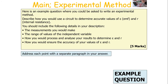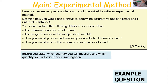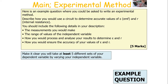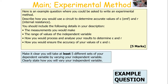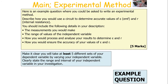If you get this type of question, address each point separately in a different paragraph. Ensure you state which quantity you will measure and which quantity you will vary in your investigation — what are the values you're going to change (your independent variable) and what are the values you're going to actually measure (your dependent variable). You've got to make it clear that at least five different sets of the dependent variable will be taken by varying the independent variable. State how you're going to vary your independent variable, what you're physically going to do, and what you're physically going to do to measure your dependent variable. Clearly state with values the range and interval of your independent variable.